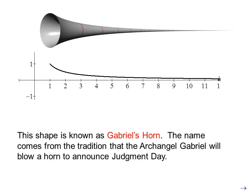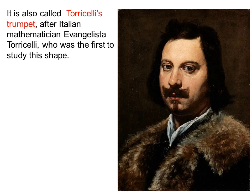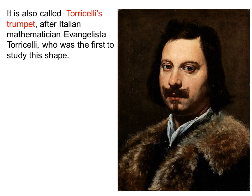The name comes from the tradition that the Archangel Gabriel will blow a horn to announce Judgment Day. It is also called Torricelli's Trumpet after Italian mathematician Evangelista Torricelli who was the first to study this shape.